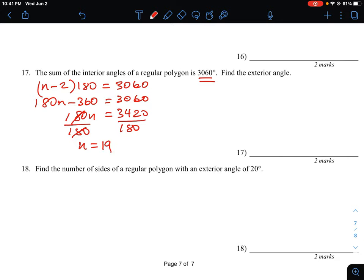The 19 tells us it's a 19-sided shape. Fairly hard to draw, but that tells us how many sides we get if we know the sum of the interior angles equals 3060.